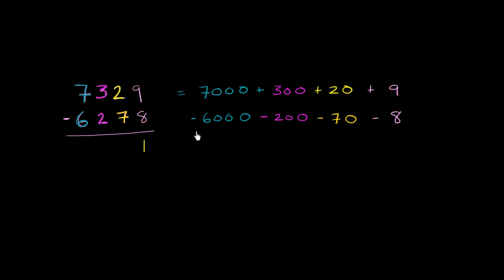What we've already done is said, subtracting 8 from 9, that's just going to be 1. But then we got over here and said, how are we going to subtract 70 from 20? The key here is to regroup some of the value up here and give it to the tens place so that we can subtract 70 from it.